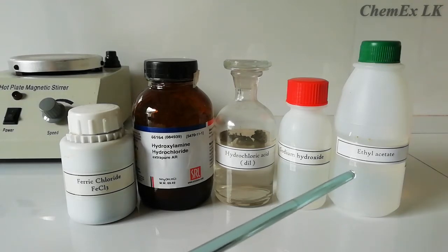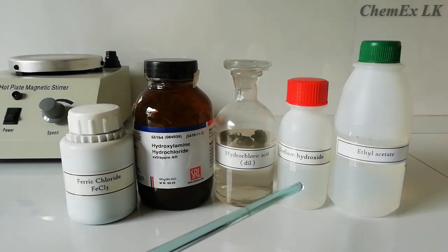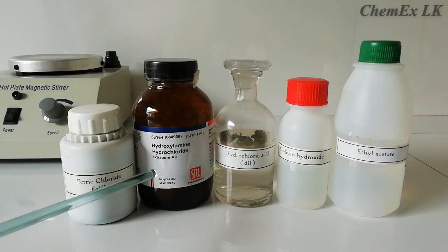So we need some chemicals. I'm going to use ethyl acetate as our test sample and we need 10% sodium hydroxide, dilute hydrochloric acid, hydroxylamine hydrochloride, and ferric chloride. We don't need a lot of ferric chloride, we need a few milliliters of dilute solution of ferric chloride.